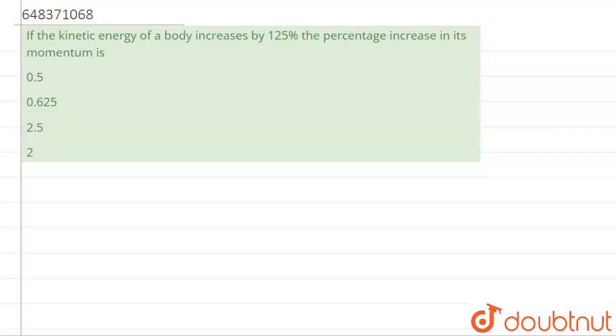Well hello students, now we're going to see this question. The question says that the kinetic energy of a body increases by 125 percent, then the percentage increase in the momentum is. So we have to find the kinetic energy of a body increases by 125 percent, that means 1.25 times.